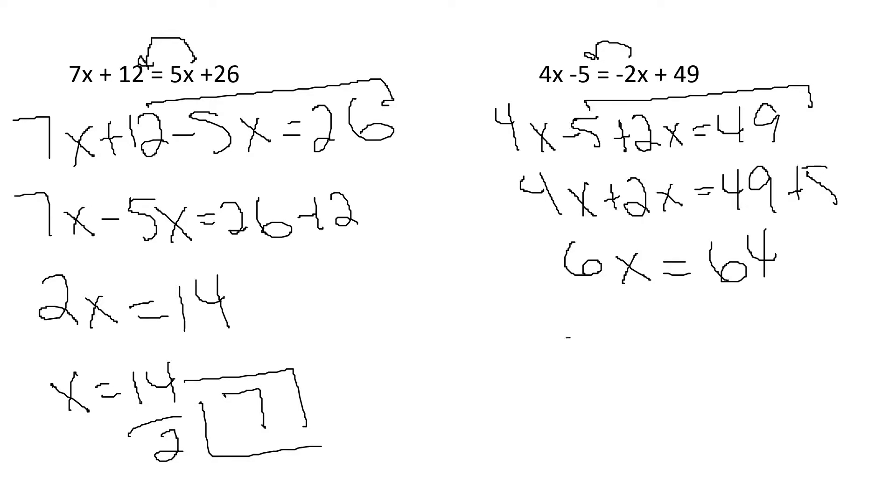Get rid of my 6. 64 over 6. That's not going to simplify down. However, it will reduce. I can divide both of them by 2. And I'm going to get 32 over 3. And that is how my answer is going to stay.